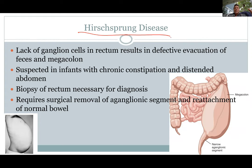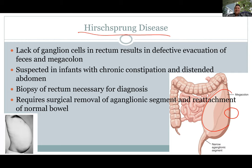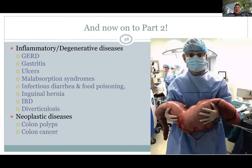Hirschsprung disease is where the ganglion cells — the nerves — are absent in a segment of the colon, making that segment immobile. Feces builds up in the immobile segment, causing a huge palpable abdominal mass and severe constipation in a child who isn't having bowel movements. Treatment involves cutting out the aganglionic segment and reconnecting the bowel. Biopsy of the colon wall confirms the diagnosis — the ganglion cells are absent. That covers the congenital conditions. Part two will cover gastric reflux, ulcers, food poisoning, hernias, and colon cancers.